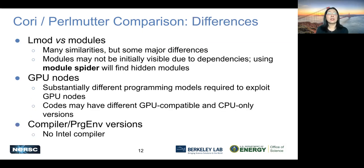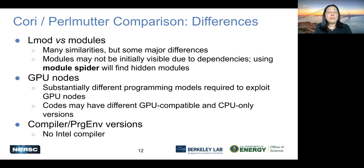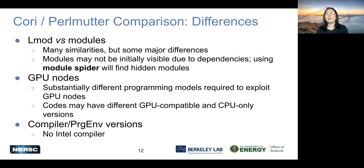What are the differences? When you do module load for a PrgEnv, there's a slight difference: we use Lmod on Perlmutter versus Tcl modules on Cori. Many commands are similar — module load, module avail, module swap, module display — but the biggest difference is that modules may not be initially visible. When you do module avail, you don't see all available modules. You need to use module spider to find hidden modules that have hierarchy dependencies. You'll hear more about this in Eric's talk today.